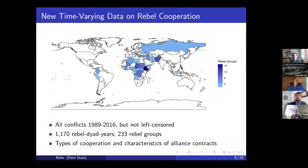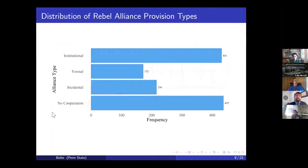To match this framework, I've compiled a new dataset on the incidence and characteristics of rebel cooperation in multi-party conflicts across the globe. The subset of data I'll use for this analysis includes over 230 distinct rebel organizations from the UCDP armed conflict database spread across over 1,100 rebel dyad-year observations. Institutional alliance provisions are by far the most common in the data — consistent with the idea that they are the most strategically beneficial for rebels, and they also tend to last a lot longer.